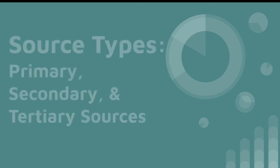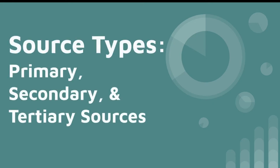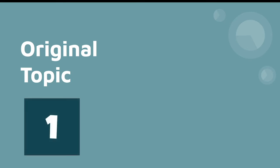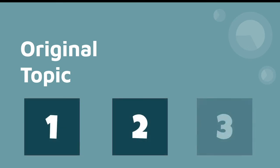Hello Bruins! Today we are continuing our source type series with a quick explanation of primary, secondary, and tertiary sources. The easiest way to think of these sources is the lower the number, the closer the source is to the original subject.